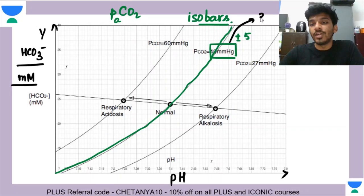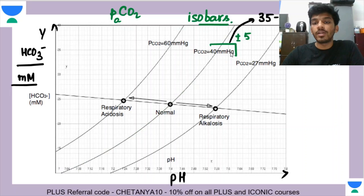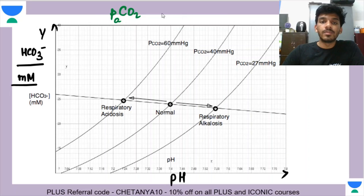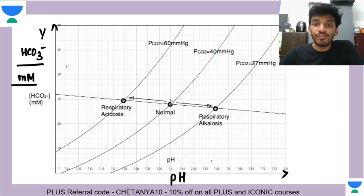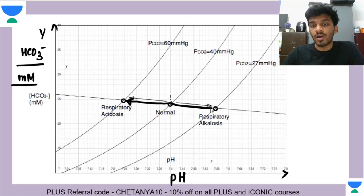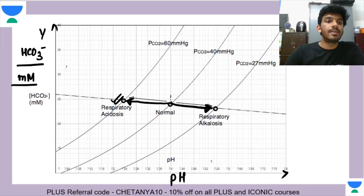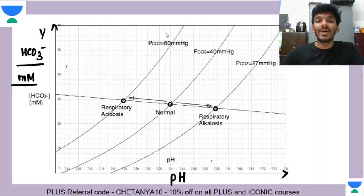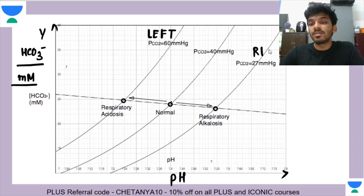The isobar corresponding to 40 mmHg will be the central one. It is easy to understand that if you increase the partial pressure of carbon dioxide, the pH should decrease — it becomes more acidic. If you decrease the partial pressure of carbon dioxide, the pH should increase, making it more alkaline. So isobars of higher values, like 60 mmHg, will lie towards the left of normal, and isobars with lesser CO2 will lie towards the right.